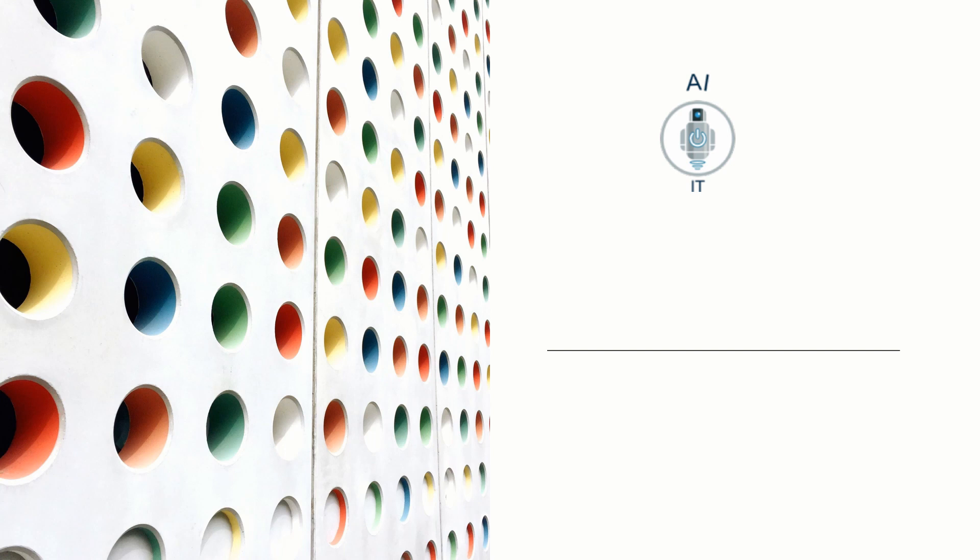So let us do an activity to understand how images are classified in a way machines read. The name of the activity that we are going to do is Pixel It.